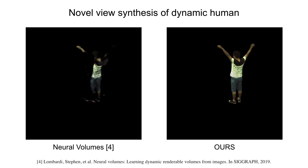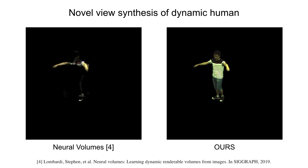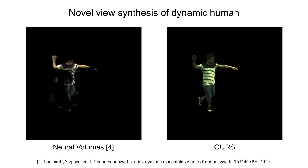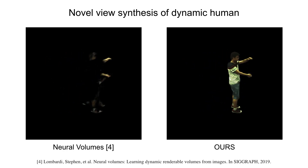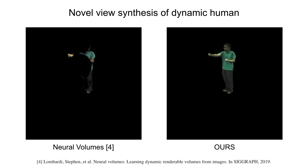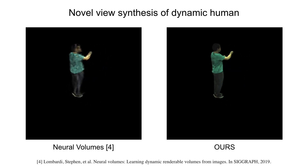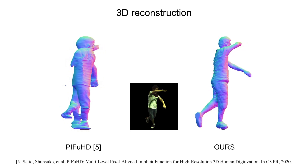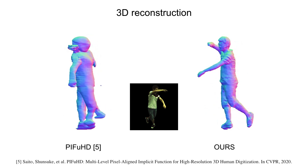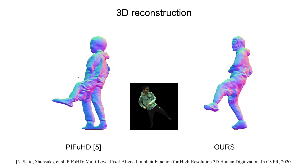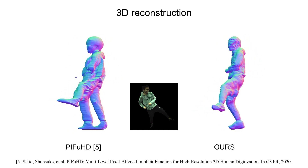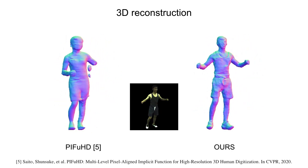Our method generates free viewpoint videos that exhibit high inter-frame and inter-view consistency. Neural Body can also be used for 3D reconstruction of the performer. Since our method reconstructs the 3D human representation from multi-view images, the reconstructed human model is highly consistent with the observations.